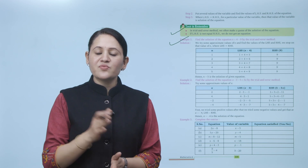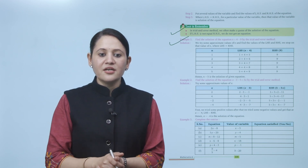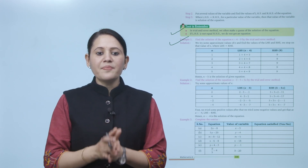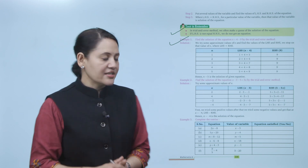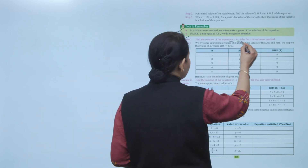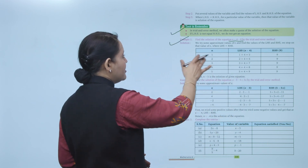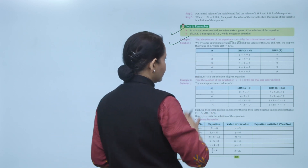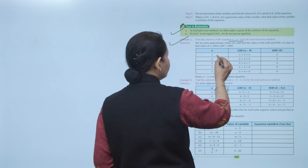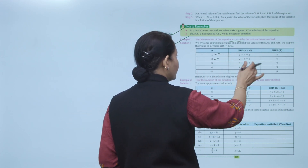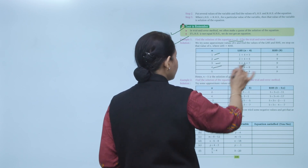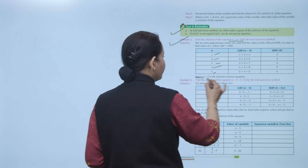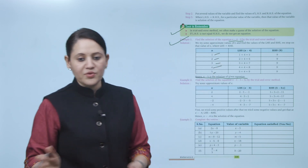Example: find the solution of n plus 4 equals 9 by trial and error method. We try values of n and find LHS and RHS, stopping when they are equal. Trying: n=1 gives 5, n=2 gives 6, n=3 gives 7, n=4 gives 8, n=5 gives 9. So n equals 5 is the solution, or root, of the equation.